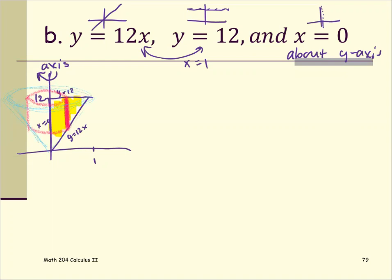So we consider one shell. For one shell, we can identify the thickness, the position, the interval of integration, the height, and the radius.